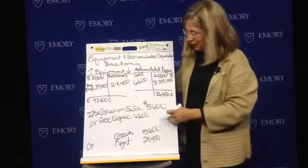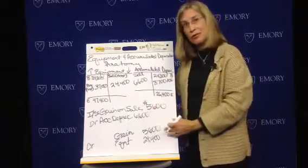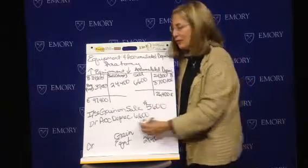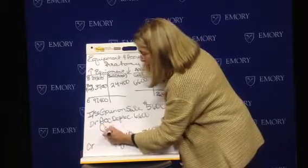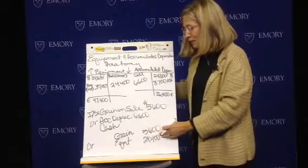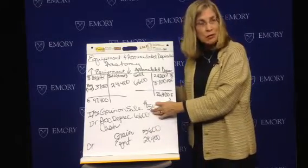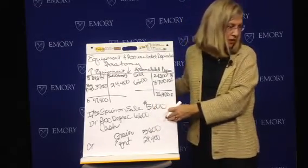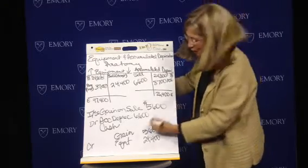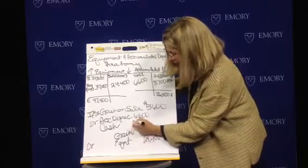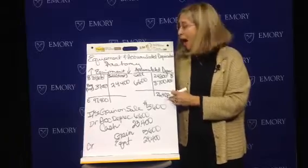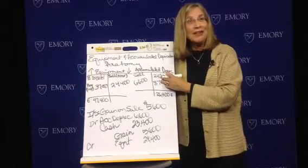I can see that my debits do not equal my credits, which they must. So the difference has to be the amount of cash I received when I sold the equipment. Totaling up my debits and subtracting my credits, I can see that the cash proceeds — the cash sales price — was $23,400. That is our CSI for selling an asset.